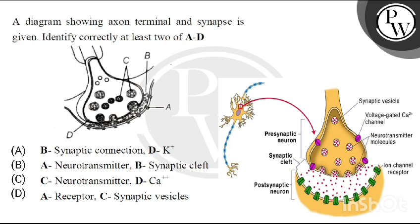So children, let's see this image here. It's in a little colored form. What is this? This is the pre-synaptic neuron. If I say pre-synaptic neuron, what do you understand? This is the axon terminal.